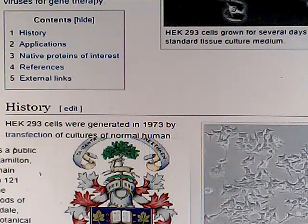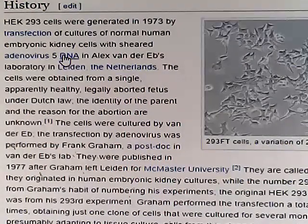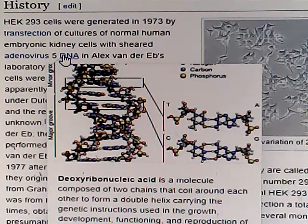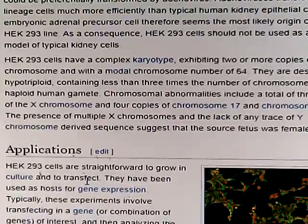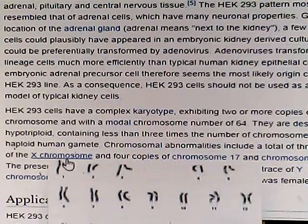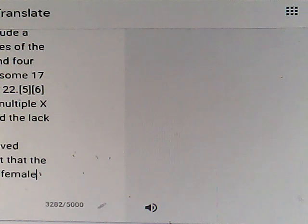A comprehensive study of the genomes and transcriptomes of HEK 293 and derivative cell lines compared the HEK 293 transcriptome with that of human kidney, adrenal, pituitary, and central nervous tissue. The HEK 293 pattern most closely resembled that of adrenal cells, which have many neuronal properties. Given the location of the adrenal gland — adrenal meaning next to the kidney — a few adrenal cells could plausibly have appeared in an embryonic kidney-derived culture and could be preferentially transformed by adenovirus. Adenoviruses transform neuronal lineage cells much more efficiently than typical human kidney epithelial cells; an embryonic adrenal precursor cell therefore seems the most likely origin cell.